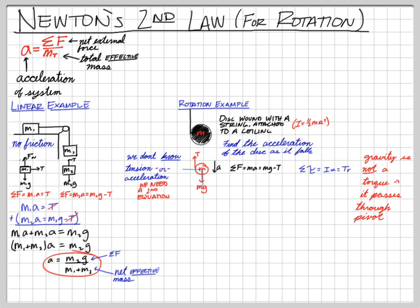We want these two equations to work together like the earlier linear equations. Substituting: I equals one-half MR squared, and A equals R times alpha, so alpha equals A over R. Rewriting the net torque equation: one-half MR squared times (A over R) equals tension times R. The R's cancel beautifully — all the R's go away — and the equation simplifies to one-half MA equals tension.